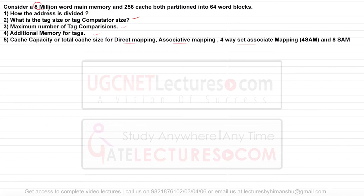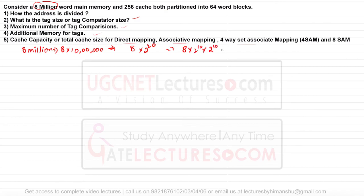The main memory size is given as 8 million words. When discussing memory, 8 million does not mean 8 × 10^6; instead it means 8 × 2^20, which equals 2^23 words. So 8 million can be written as 8 × 2^10 × 2^10, giving us 2^23 words total.